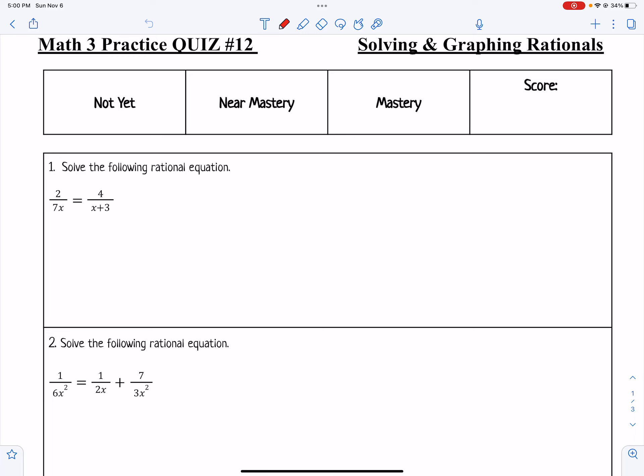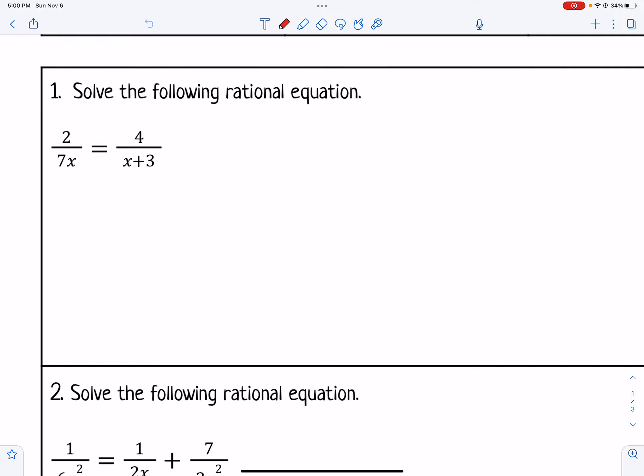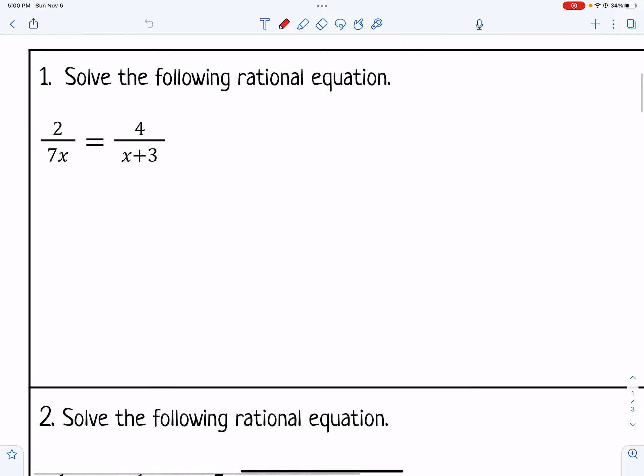Let's take a look at practice quiz number 12 on solving and graphing rationals. Number 1 says to solve the following rational equation. This is the type 1 rational equation where we're able to go ahead and cross multiply to solve this one.